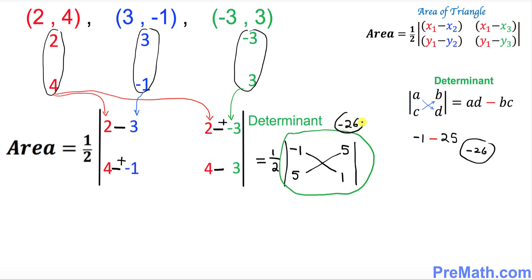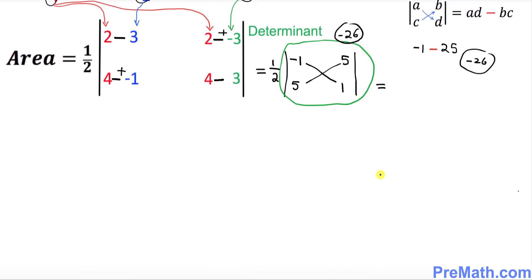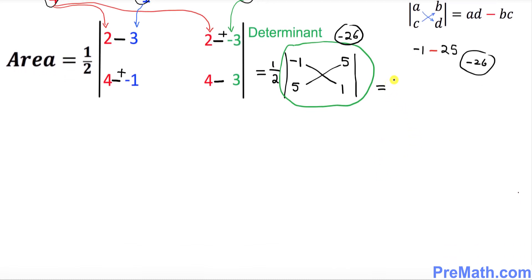We figured out the value of this determinant is negative 26. So that's going to be 1 over 2 times negative 26, equal to negative 13.